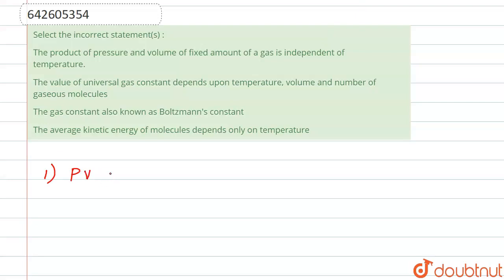So let us write the first statement, which is saying product of pressure and volume. We know that PV equals nRT, and it is saying that for a fixed amount it is independent of temperature. But in this equation we see that PV is directly proportional to temperature.